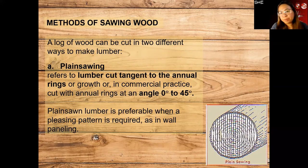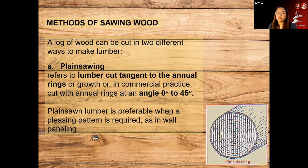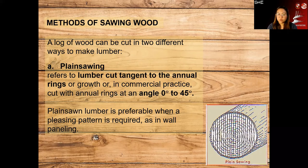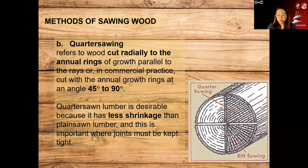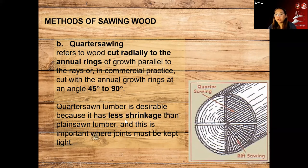There are different methods of sawing wood. We have plain sawing, which refers to lumber cut tangent to the annual rings. The angle is 0 to 45 degrees. Plain sawn lumber is preferable when a pleasing pattern is required, as in wall paneling. We also have quarter sawing, which cuts radially through the annual rings at 45 to 90 degrees. Quarter sawn lumber is desirable because it has less shrinkage than plain sawn.